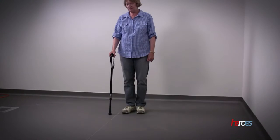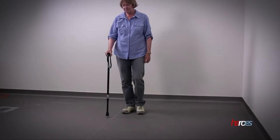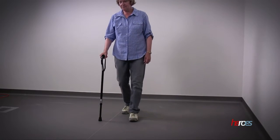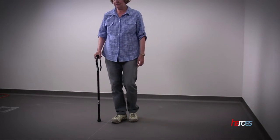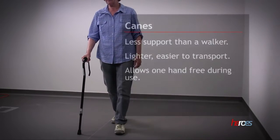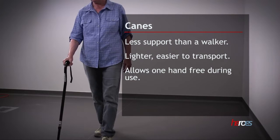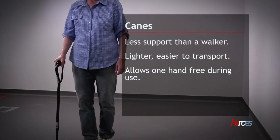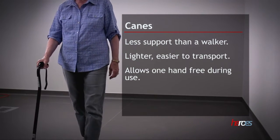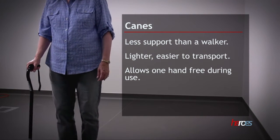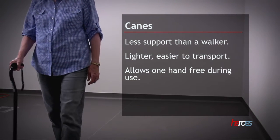A cane is a common assistive device used to increase balance. It offers less support than a walker, but is lighter, easier to transport, and allows one hand to be free while using it.